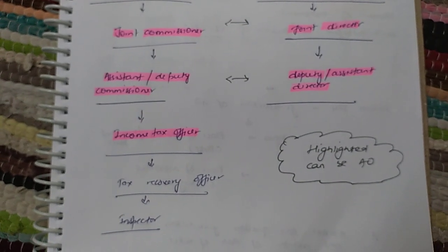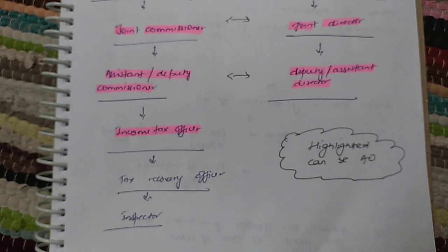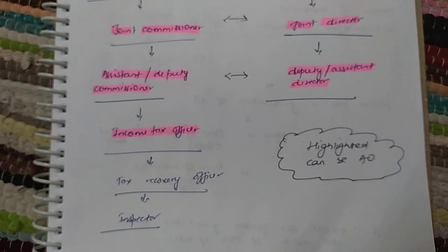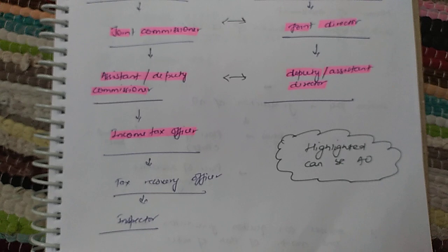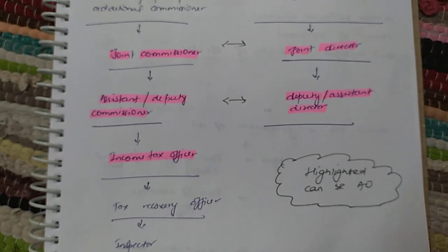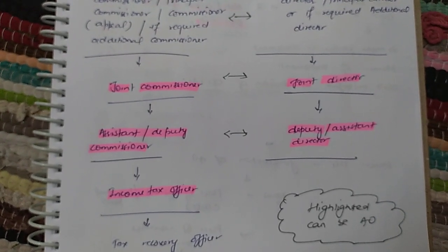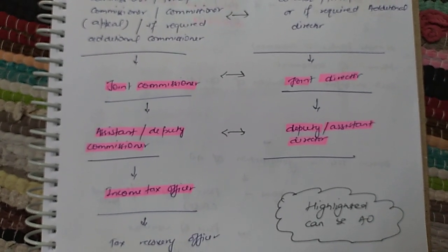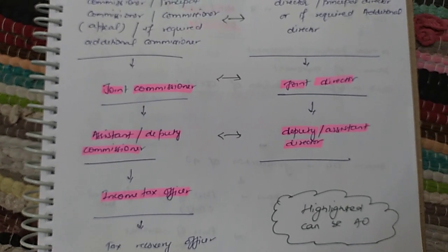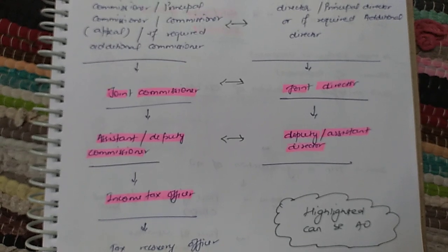Under the Analysis Wing, the lowest authority is the Inspector of Income Tax. Above that we have the Tax Recovery Officer, and above that is the Income Tax Officer. Above the Income Tax Officer we have the Assistant Commissioner and the Deputy Commissioner, with parallel positions of Deputy Director and Assistant Director under the Investigation Wing.